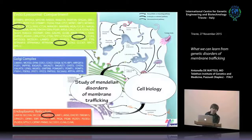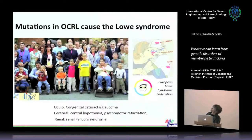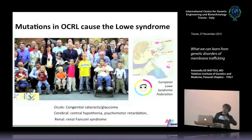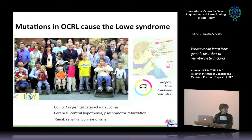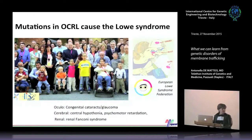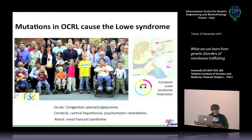The disease I will talk about today is Lowe syndrome, caused by mutation in the gene called OCRL. This is a rather special project in the lab because we are not only studying the function of this protein at the bench, but we are also helping Italian families with children affected by this disease. We helped establish the Italian Association of Lowe Syndrome many years ago.